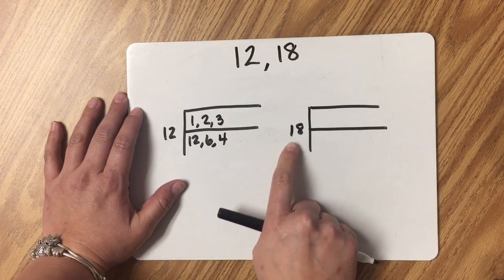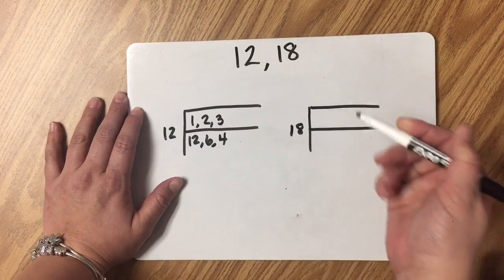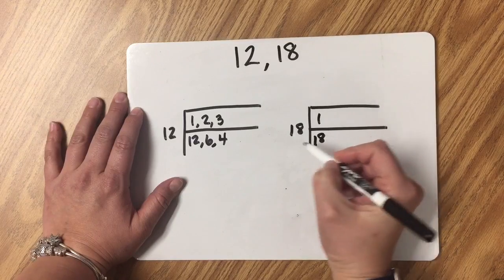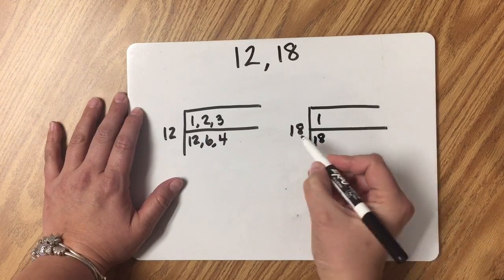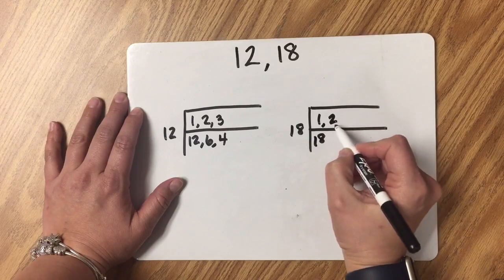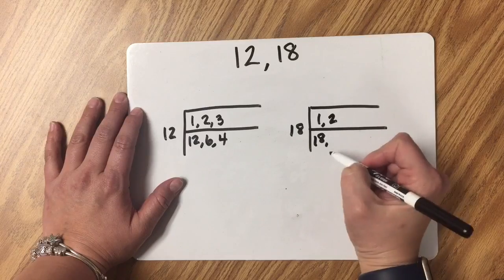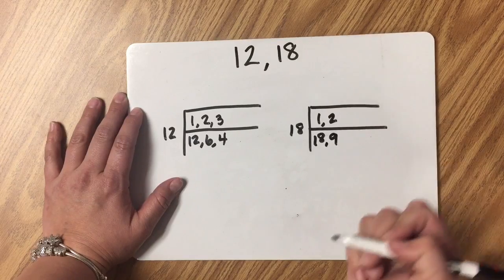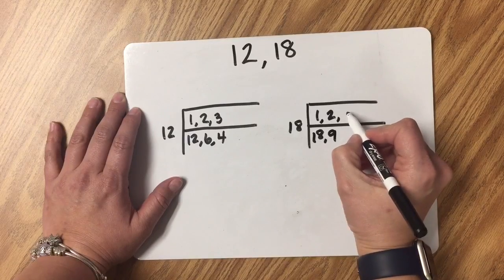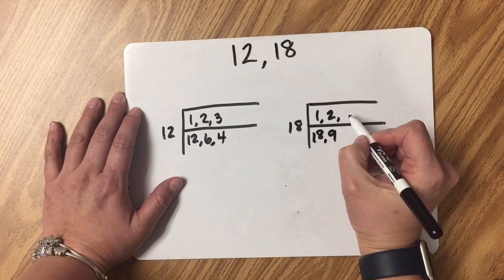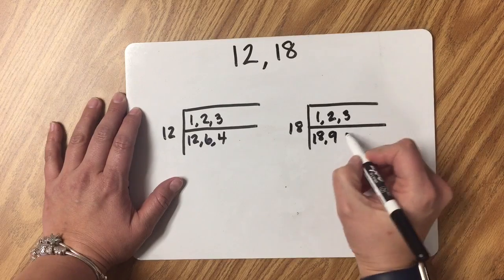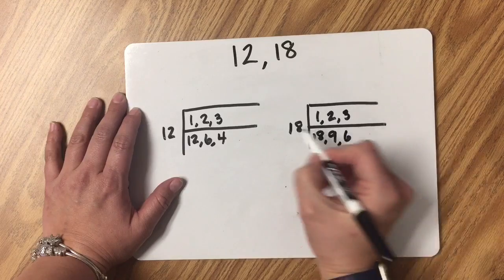I'm going to do the same thing with 18. And like I said, I start with 1. Well 1 times 18 is 18. 18 is even, so I definitely know that 2 is a factor. 2 times another number, which is 9, equals 18. I'm going to move on to the next number that's coming up, which is 3. 3 times 6 equals 18.